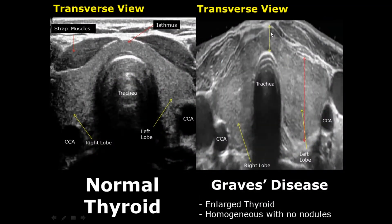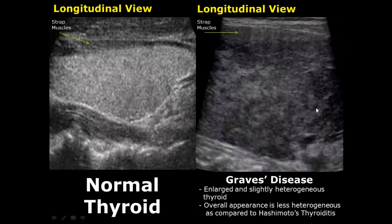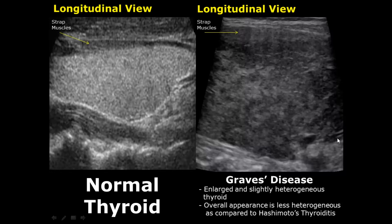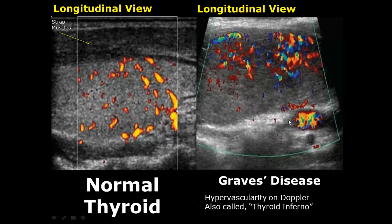Graves' disease is a common cause of hyperthyroidism. The thyroid can appear enlarged and homogeneous without any nodules. In this image you can see heterogeneous areas in the thyroid, but compared to Hashimoto's thyroiditis it is less heterogeneous — the echo texture is somewhat smoother in Graves' disease. Remember: Hashimoto's thyroiditis causes hypothyroidism and Graves' disease causes hyperthyroidism. On Doppler, Graves' disease can also give hypervascularity — thyroid inferno — but it is more common in Hashimoto's thyroiditis.